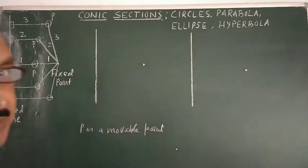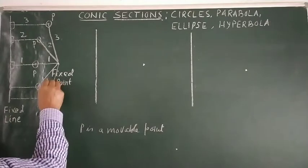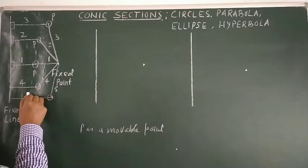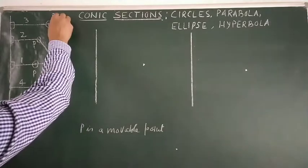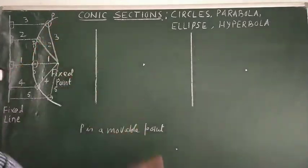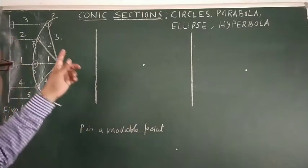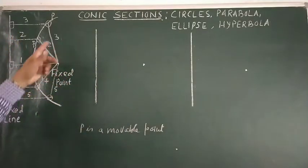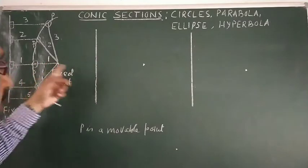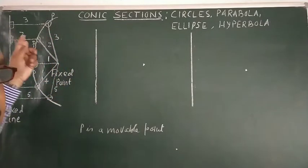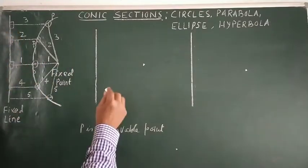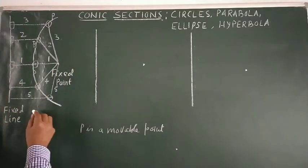Equal distance must be maintained — suppose this is four, this must be four; if this is five, this must be five. The path of the moving point is called a parabola. This is the parabolic path where equal distances must be maintained from the fixed point and from the fixed line.